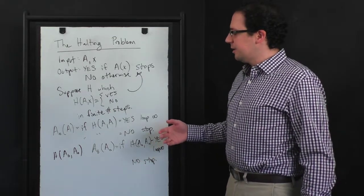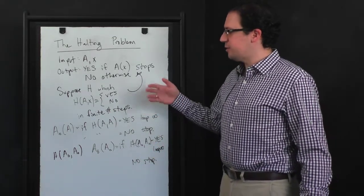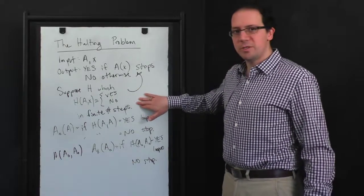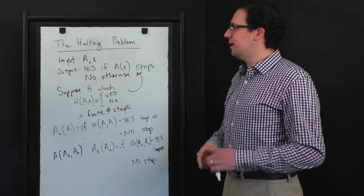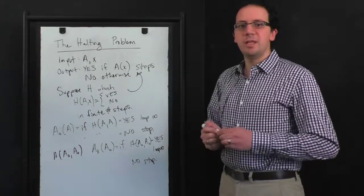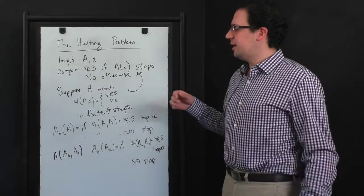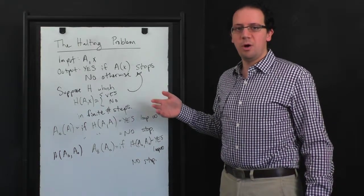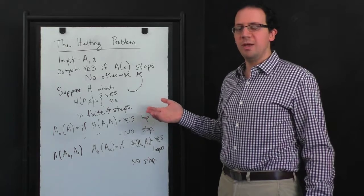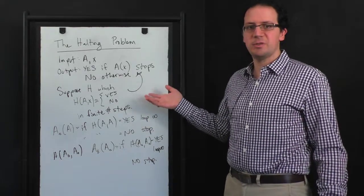So this shows that there's no algorithm which itself always halts, which solves the halting problem. And again, this is sort of the cleanest mathematical formulation, but their motivation was to show that there was no algorithm that could automate mathematical theorem proving. And that actually follows essentially as a consequence of this.